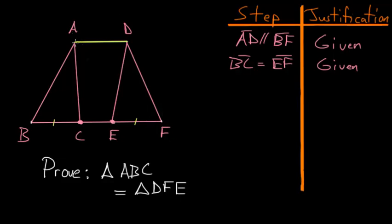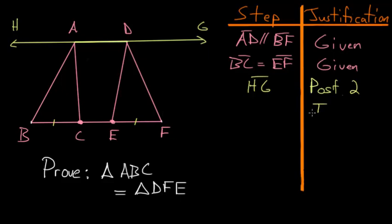And to start this, let's first take this line AD and extend it in both directions, which we can do because of Postulate number 2. So Postulate number 2 allows us to extend this to, let's call these points G and H. So we just created the line HG.